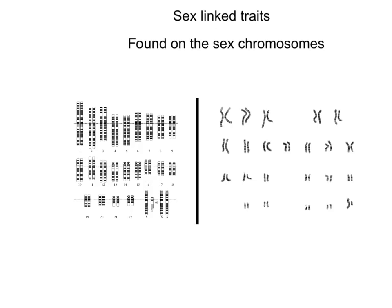Let's look at our last way to do Punnett squares. We're going to be focused on sex-linked traits. Sex-linked traits are found on the X and the Y chromosomes, the chromosomes that determine gender.